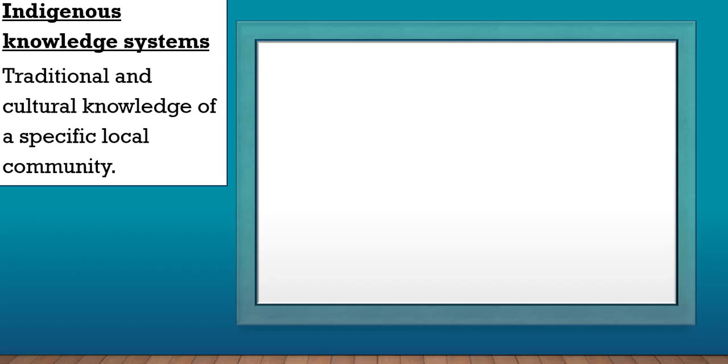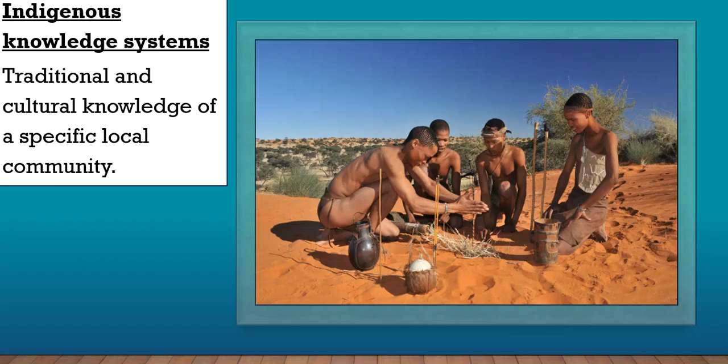Indigenous knowledge is the traditional and cultural knowledge of a specific local community. Indigenous means it is traditional knowledge that the community has. For example, the Khoisan people, who can still be found in certain regions especially in the Northern Cape, would have indigenous knowledge about their systems and their history.